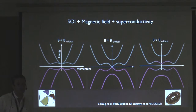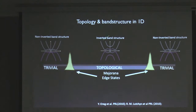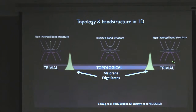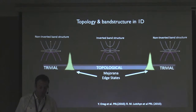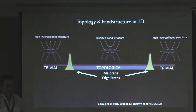A natural way to think about how you get a Majorana from this picture: imagine you have a 1D superconductor where one region is topological with an inverted band structure and the outside region is trivial with a non-inverted band structure. If you go from topological to trivial, at some point the bands have to untwist, and this is where you expect your Majoranas to occur. This is the recipe proposed back in 2010, and on a very simple level, this is how we wanted to realize Majorana modes.